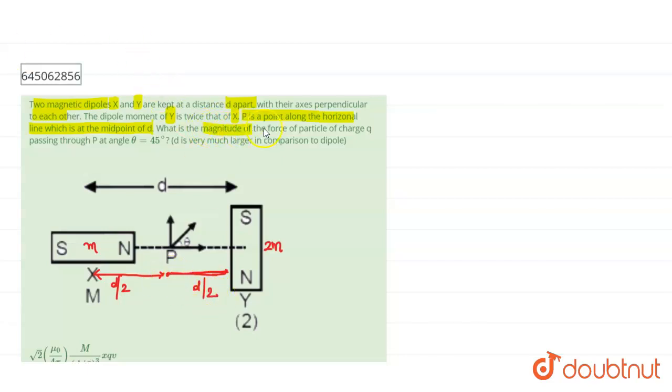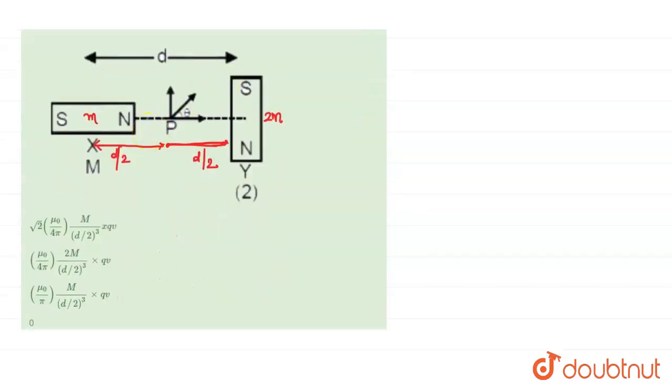What is the magnitude of force on a particle of charge Q passing through the point P at an angle theta is equal to 45 degrees? Here four options are given regarding the value of the magnitude of the force. So what is given here, two magnetic dipoles M and 2M is given and a charged particle is placed here.